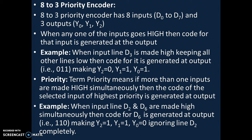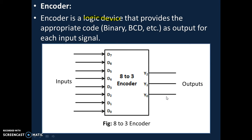Now let's see what priority means. If more than one of the inputs are made high simultaneously, then the code for the input of the highest priority is generated at the output. For example, suppose D1 and D7 are made high simultaneously. The encoder will generate the code for D7, because D7 has the highest priority. Priority increases from D0 to D7.